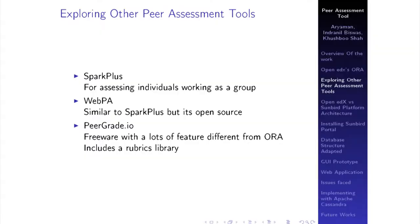We also explored other peer assessment tools that are available. One was Spark Plus — it was not open source but was being implemented on a wide scale; however, it was used to assess the contributions of individuals working in a group. A similar tool was WebPA, which is open source but does the same thing as Spark Plus. Another very good tool was peergrade.io, which has unique features different from ORA — for example, it includes a rubrics library. ORA does not have that; you have to manually write the different options and criteria, which is very tedious. But in peergrade.io, you can do that automatically.